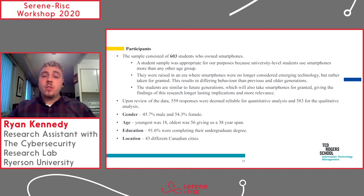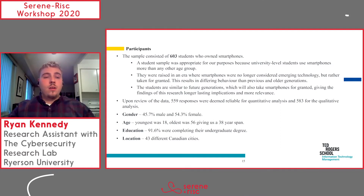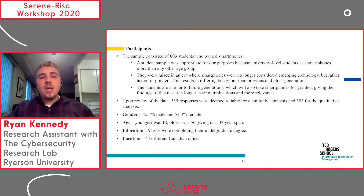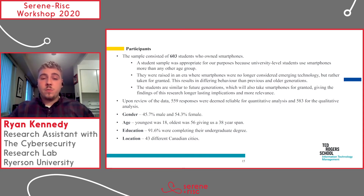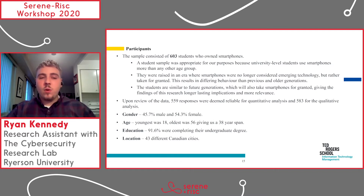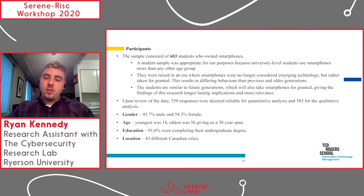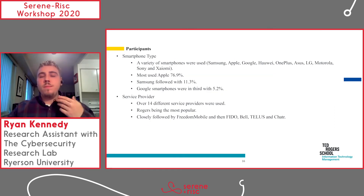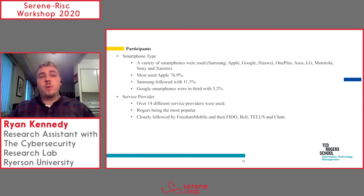We had 559 good responses for the quantitative analysis and 583 for the qualitative analysis. In terms of gender distribution, there was slightly less males than females. The youngest respondent was 18 and the oldest was 56, giving us a 38-year age span. In terms of education, 91.6% were completing their undergraduate degree. We had respondents from 43 different Canadian cities, a variety of smartphone types with Apple being used most, and over 14 different service providers.